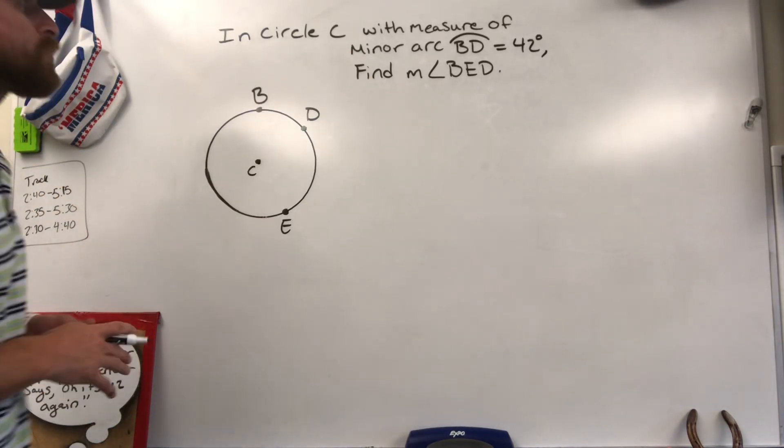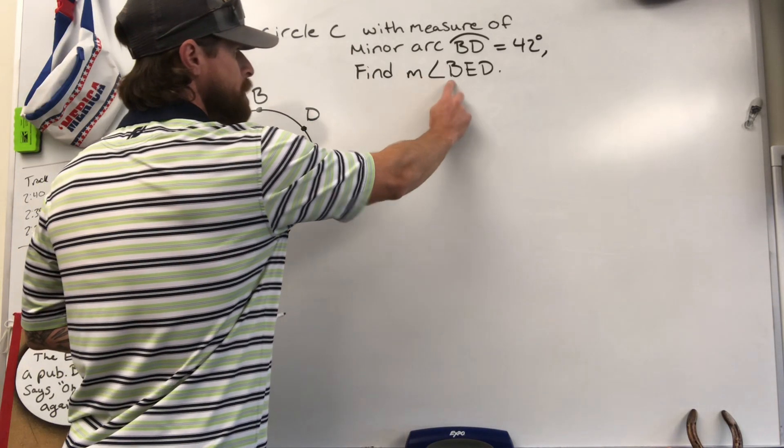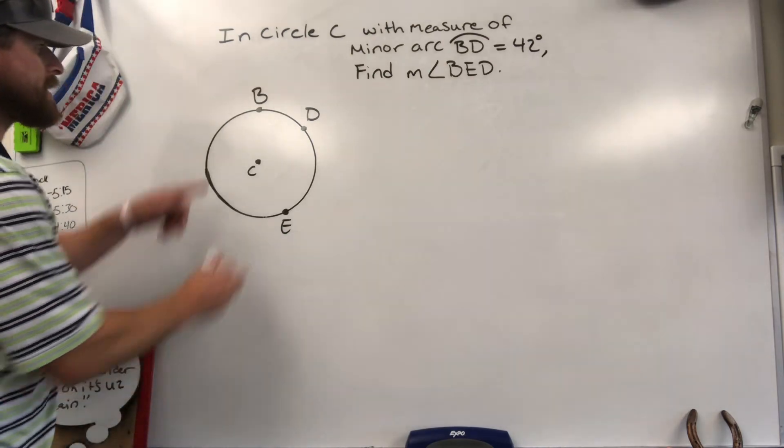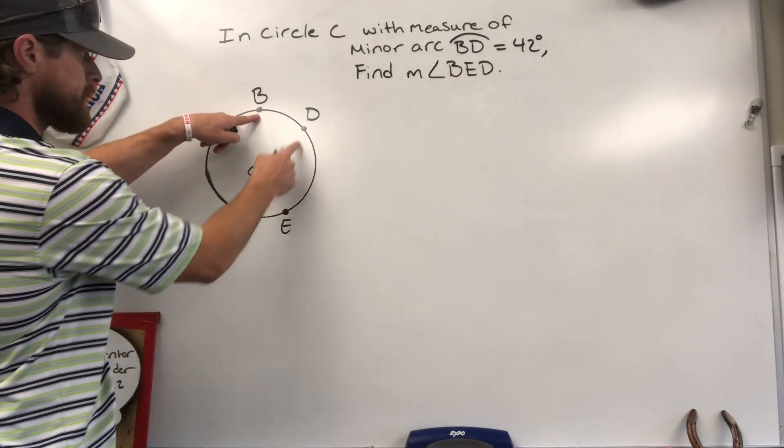Okay, in this problem you are being asked to find measure of angle BED. So BED is created from B to E to D.